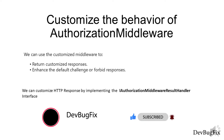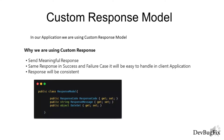We can customize the HTTP response by implementing the IAuthorizationMiddlewareResultHandler interface. In our application we are using a custom response model to send meaningful responses, to send the same response in success and failure cases, and to keep responses consistent. Every response will have a response code, response message, and dataset, making it easy to handle in a client application.